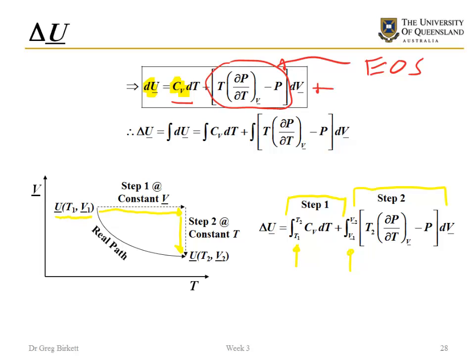Now the issue with this is that we need to know what the heat capacity is. We don't tend to know what the heat capacity is just at any arbitrary volume. We tend to only know this at ideal gas conditions, because that's where things are tabulated at.